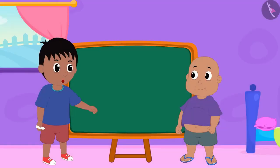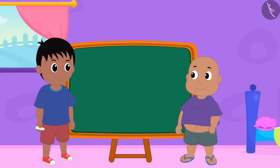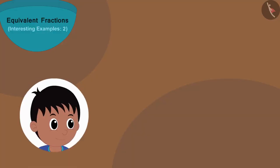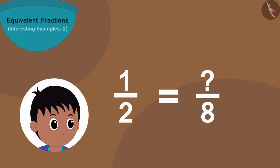Today Raju and Bablu are playing a unique game. Raju will write a fraction, then he will write the number below the equivalent of that fraction, and Bablu will have to find the number above it.